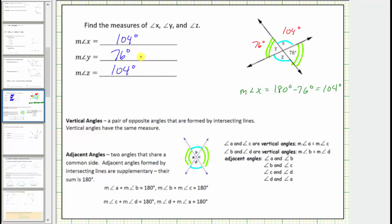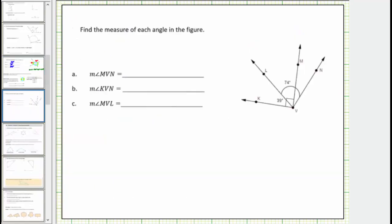Let's look at the second example. Looking at the diagram, we have a right angle here. Angle KVM is a right angle and measures 90 degrees. We're also given that the measure of angle LVN is 74 degrees and the measure of angle KVL is 39 degrees. We're asked to determine the measure of three angles.